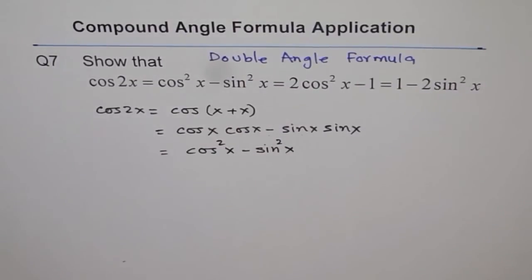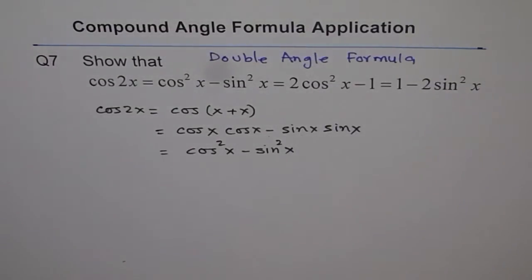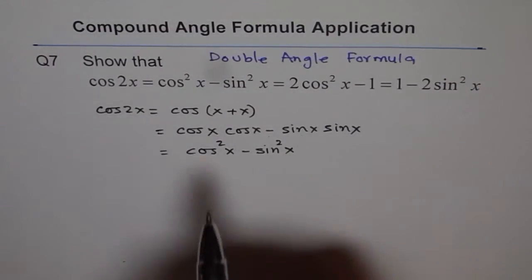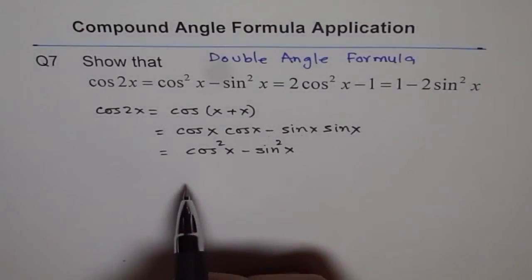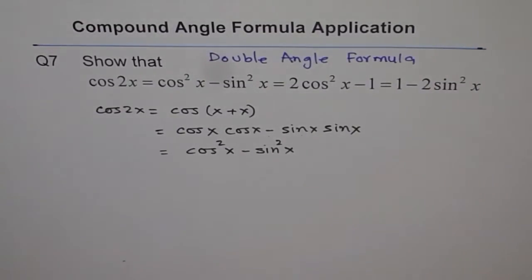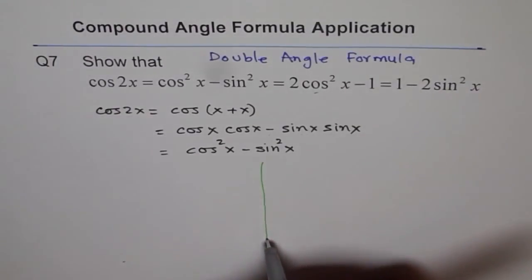That is one formula which you can use directly. And the other forms we can get by writing cos square x as 1 minus sin square x. So the other two, let me do them separately.